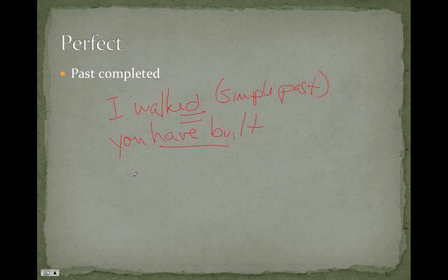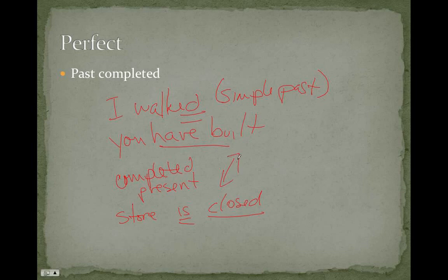Latin also has something called the present perfect. We don't use this very often in English, but we do have certain phrases which use the present perfect. And again, what this is going to be is a completed action from the point of view of the present. So, when you think about a store, the store is closed. Somebody closed this store in the past, but it is in a current state of being closed. So, the store is closed, is what we would call the present perfect. Latin will use the same form, whether it's present perfect or past perfect. But, by and large, when you run into the perfect forms, they're going to be past completed. I walked, you have built, he has seen the light.